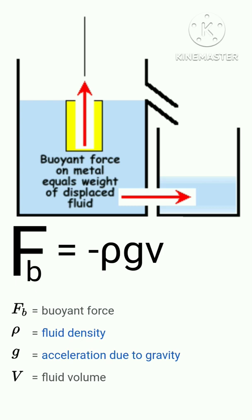Fb equals buoyant force, rho equals liquid density, g equals acceleration due to gravity, V equals fluid volume.